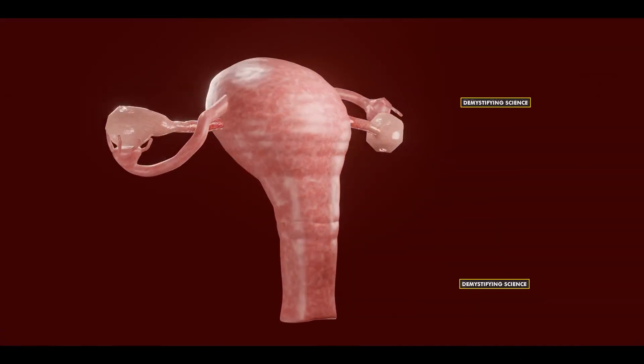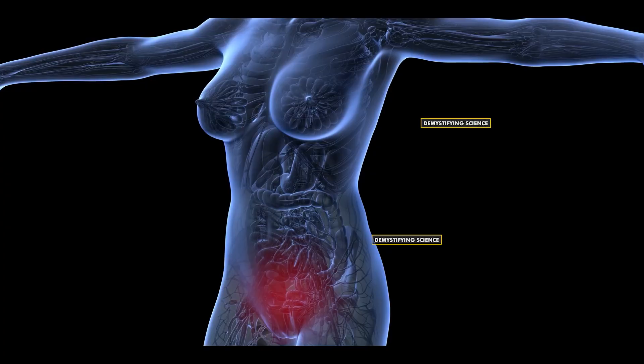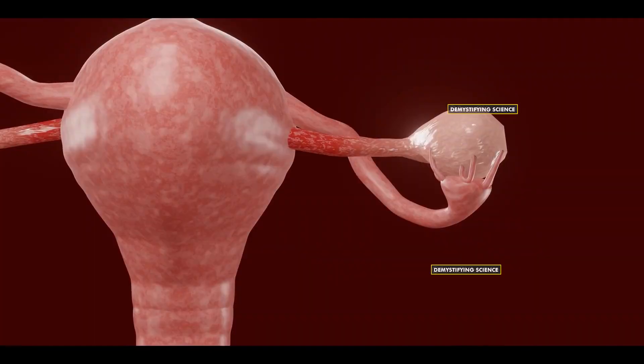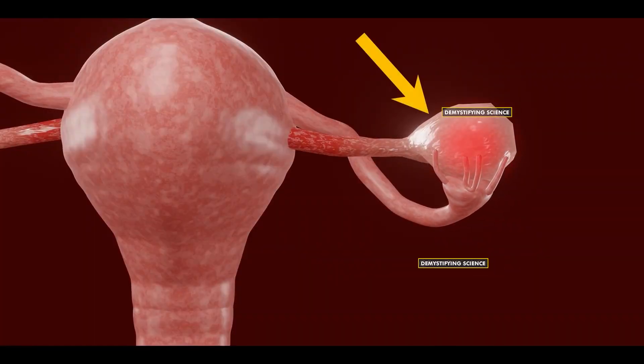Symptoms of ovarian torsion include intense pain in the lower abdomen and inflammation in the peritoneum membrane due to the blocked blood supply and dying ovarian tissues.